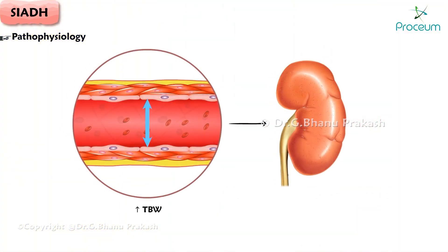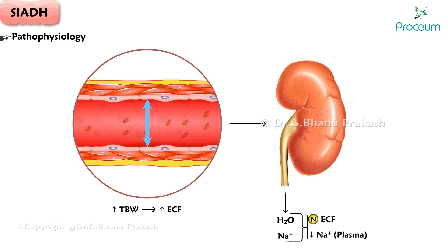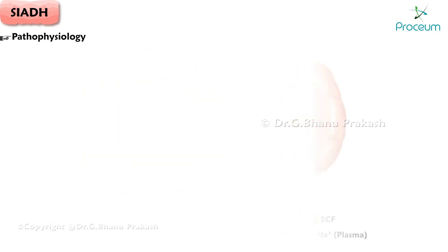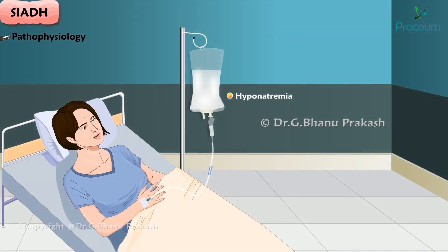In addition, the increase in total body water transiently expands the extracellular fluid volume and thereby triggers increased urinary sodium excretion, which both returns the extracellular fluid volume toward normal and further lowers the plasma sodium concentration. Hyponatremia can occur in SIADH even if the only fluid given is isotonic saline.